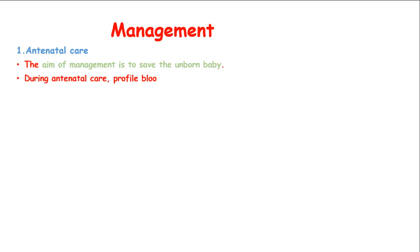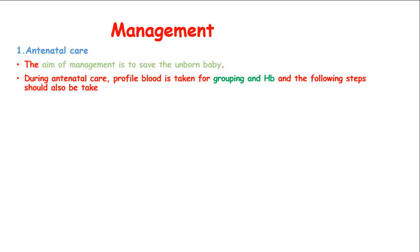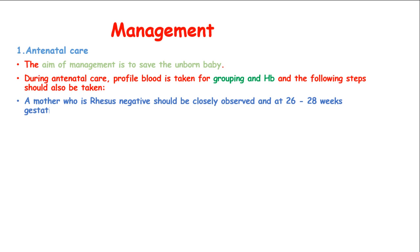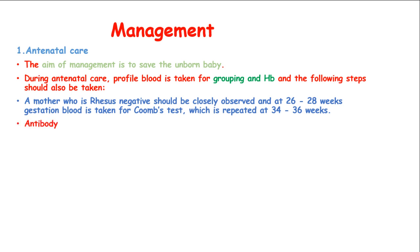During antenatal care, profile blood is taken for grouping and hemoglobin, and the following steps should also be taken. A mother who is Rhesus negative should be closely monitored at 26 to 28 weeks gestation, and blood is taken for Coombs test, which is repeated at 34 to 36 weeks. Antibody titers are estimated, and if they continue to rise, then labor is induced.